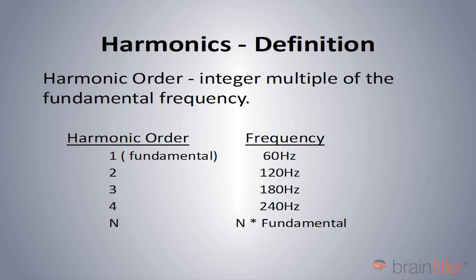So the first harmonic, or the fundamental, is going to be 60 Hz. A second harmonic would be 2 times 60 Hz — that would be 120 Hz. Third harmonic would be 180 Hz, and so on. And if you're in a country or an area with a 50 Hz power system, this would just be translated to 50 Hz. The first harmonic would be 50 Hz, second harmonic would be 100 Hz, and so on.